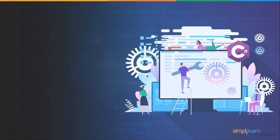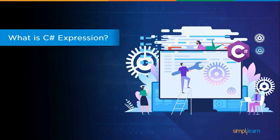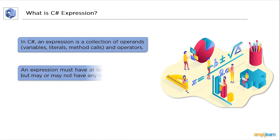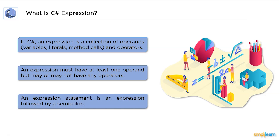Now let's discuss expressions. An expression in C# is made up of operands — that are variables, literals, methods, calls — and operators. An expression must have at least one operand but can have zero or more operators. An expression statement is an expression followed by a semicolon.